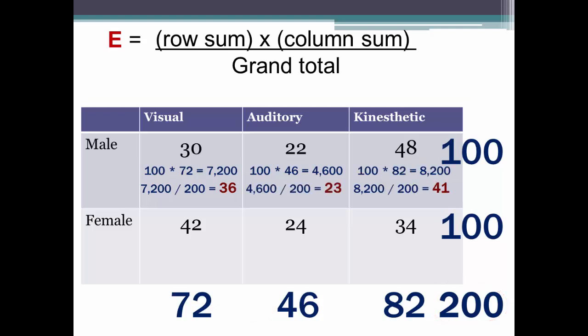You would do exactly the same for each cell for the females, only this time you're using the row total for the females. Stop. Some of you have already figured out that, in this case, the numbers are the same for males and for females. Caution, however, this only works if you have exactly the same number for each row total.